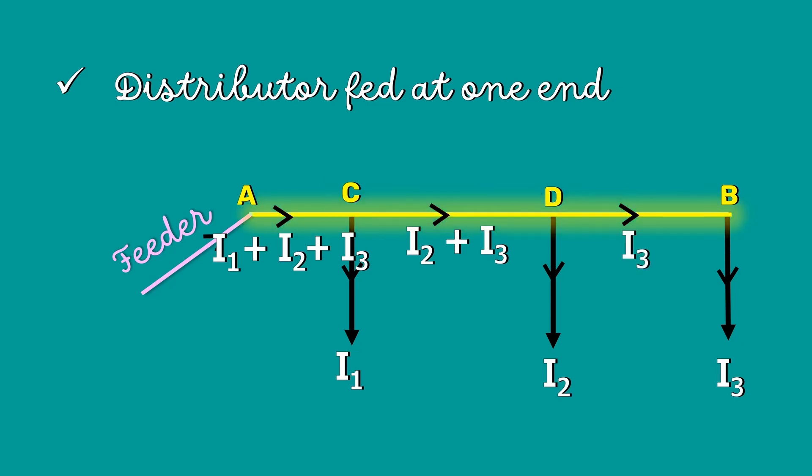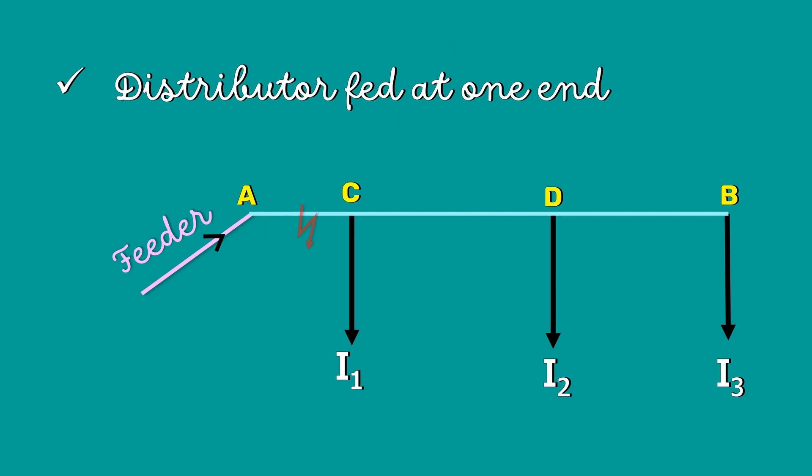Now, look at this distributor AB. The current in various sections of this distributor keeps on decreasing. This also means that the minimum voltage occurs at the load point B. Since the distributor is fed at only one end, in the case of fault, the continuity of the supply is interrupted.